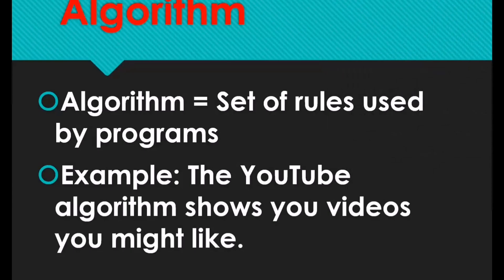The next one is algorithm. Algorithm is a set of rules used by programs. For example, the YouTube algorithm shows you videos you might like. That's why it's important to know when to post on YouTube and what day to post — you should stick by it because the algorithm already knows that and will recommend your videos to many people.